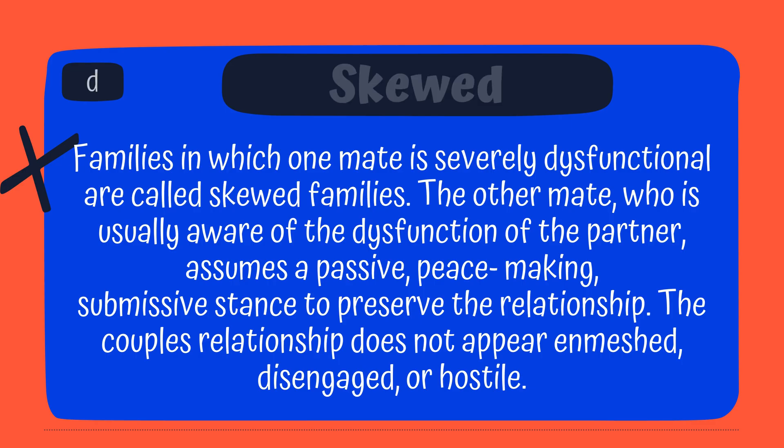The answer is D, skewed. Families in which one mate is severely dysfunctional are called skewed families. The other mate, who is usually aware of the dysfunction of the partner, assumes a passive, peacemaking, submissive stance to preserve the relationship. The couple's relationship does not appear to present with the other three options.